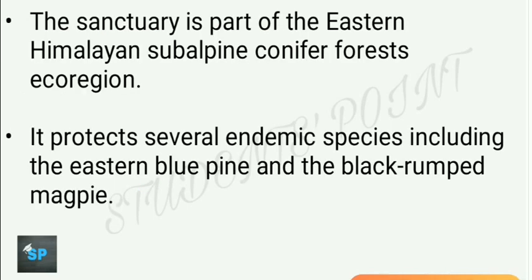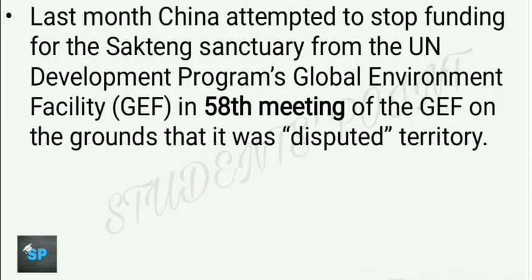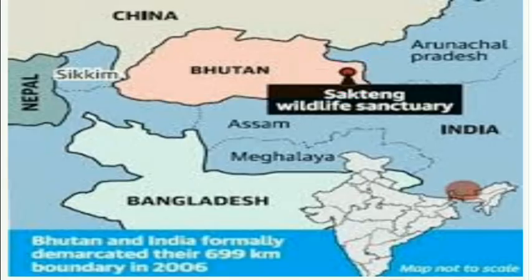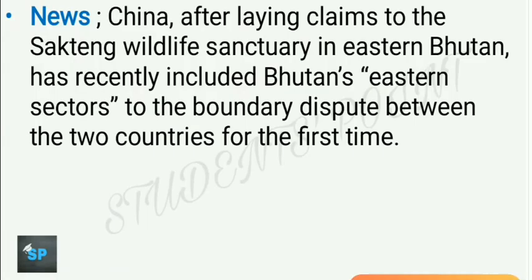The sanctuary in question is part of the Eastern Himalaya subalpine conifer forest ecoregion and protects several endemic species including Eastern blue pine and black-rumped magpie. It was in news recently because last month in June, China attempted to stop funding for this sanctuary from the UN Development Program's GEF (Global Environment Facility) in its 58th meeting, on the grounds that it was in disputed territory. However, there is no logic for China to claim this as the sanctuary is entirely within the boundaries of Bhutan and does not even share a boundary with China.